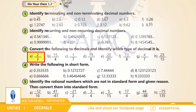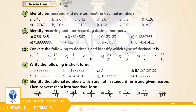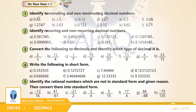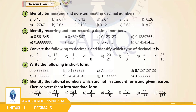0.123, 2/3 — اس fraction کو divide کرنے سے remainder 0 نہیں آ رہا، اس لیے یہ non-terminating decimal ہے۔ ساتھ میں ہی one digit 6 بار بار repeat ہو رہا ہے، اس لیے اس کو recurring non-terminating decimal کہا جائے گا۔